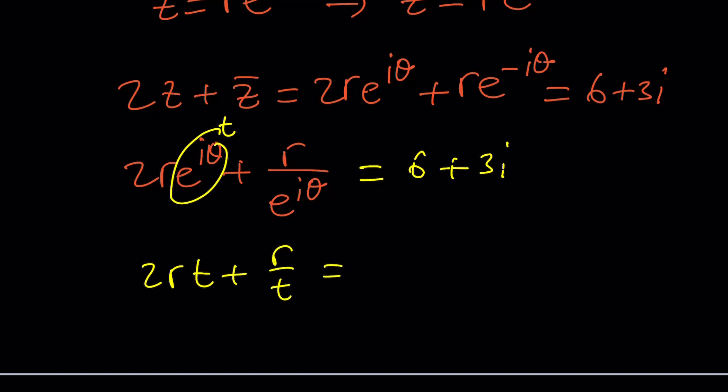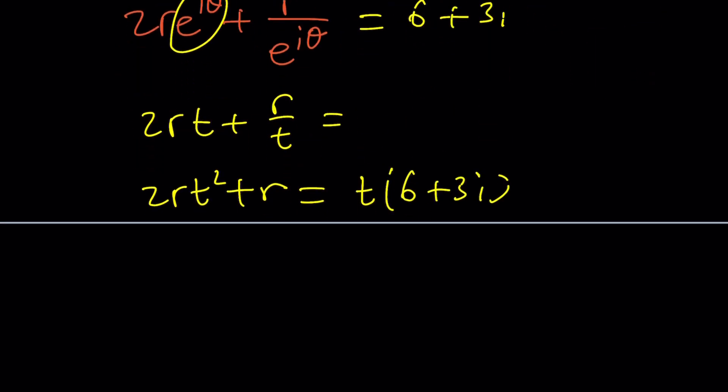2rt squared plus r divided by t, but you can go ahead and multiply by t both sides. And then if you distribute, you're going to come up with something like this 2rt squared minus 6 plus 3it plus r equals 0.